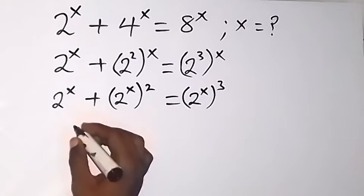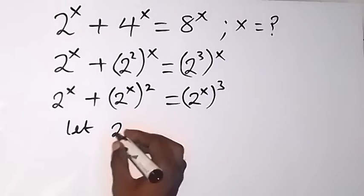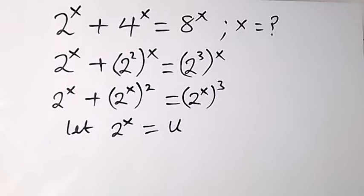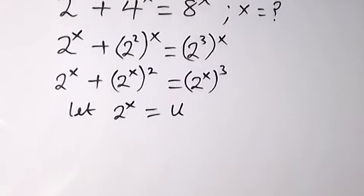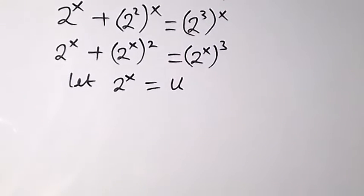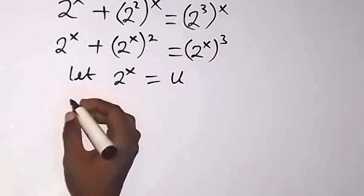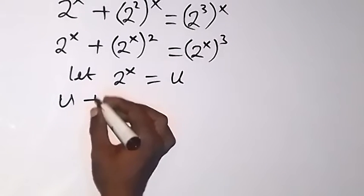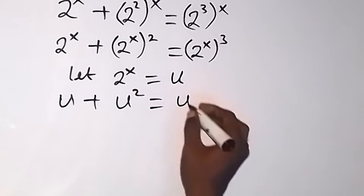From here, let's use a letter to represent 2 raised to power x. Let's call the letter u. So let u equal 2 raised to power x. Then we can write this equation as: u plus u squared equals u cubed.